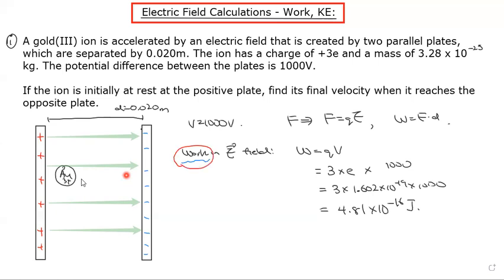So this work became kinetic energy, and kinetic energy is equal to half mv squared. Because this kinetic energy is the work, it's 4.81 times 10 to the negative 16, and we know m because it's given in the question.